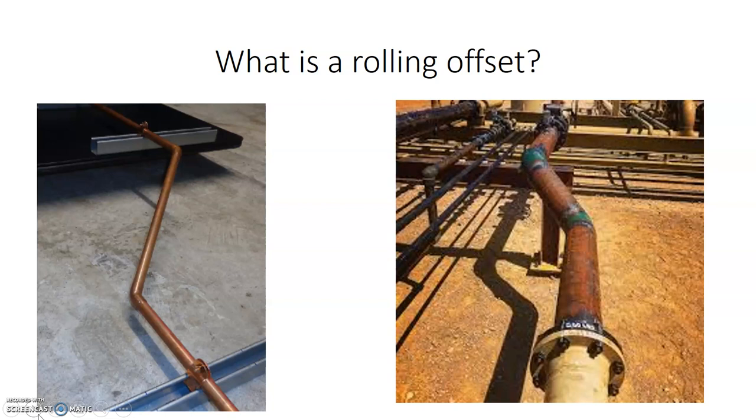So what we're looking at here is two rolling offsets on either side, different pictures of rolling offsets. Unlike our single offset, other than moving up and down, it's also moving in another direction, maybe side to side. The copper one on the left-hand side, starting from the bottom of the picture, the offset is going up onto the black surface there, as well as it's also rolling to the right. The other picture on the right-hand side here, the pipe is lower. It's going to go up higher onto those steel stands there, but it also is rolling to the left. So it's a rolling offset.